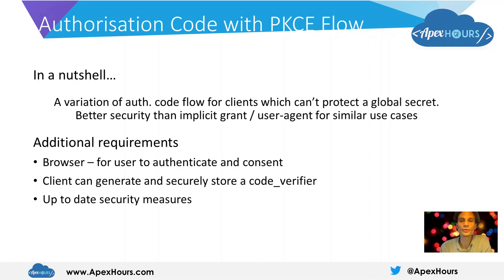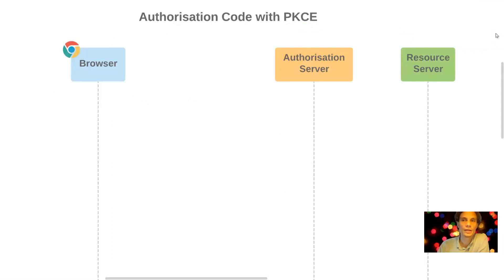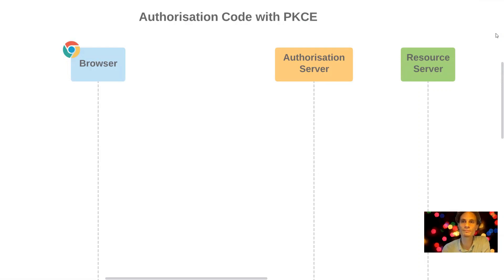General good security practices and appropriate countermeasures should be in place. As with the implicit grant flow, there are three main system actors: the browser that the resource owner is using and authenticating through; the authorization server, which is the application the user signs into and provides consent through; and the resource server, which is the application the client will ultimately interact with to use its APIs.